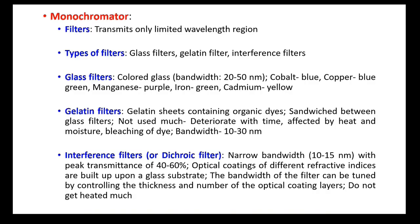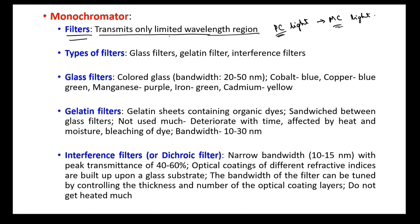Now coming to monochromators. Monochromators convert polychromatic light to monochromatic light. You can use certain filters which transmit only a limited wavelength region. The types of filters include glass filters, gelatin filters, and interference filters.